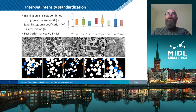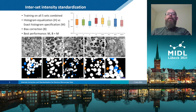Finally, we trained our network on all five sets combined. Intensity of the data was standardized by either histogram equalization or by applying the exact histogram specification algorithm. In the latter case, we calculated the transformation between intensity histograms of entire sets using one set as a reference, and consequently mapped the intensity of each frame. In addition, an optional bias correction step was applied before the standardization.